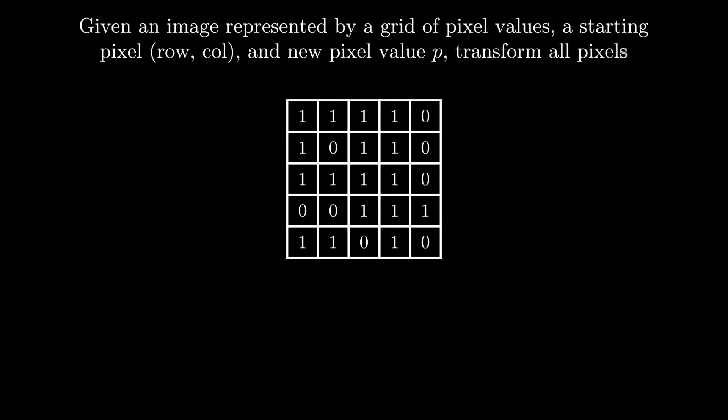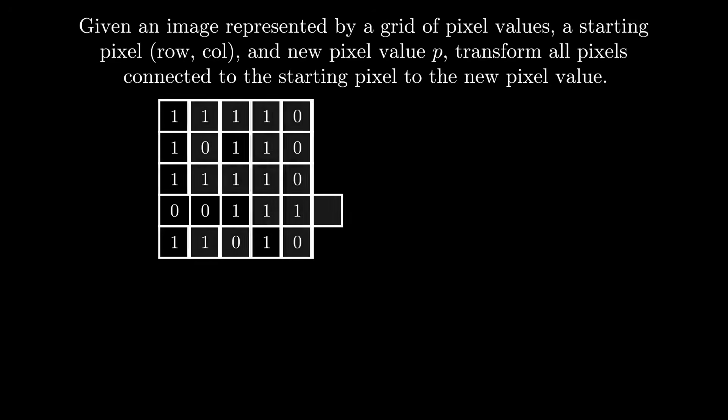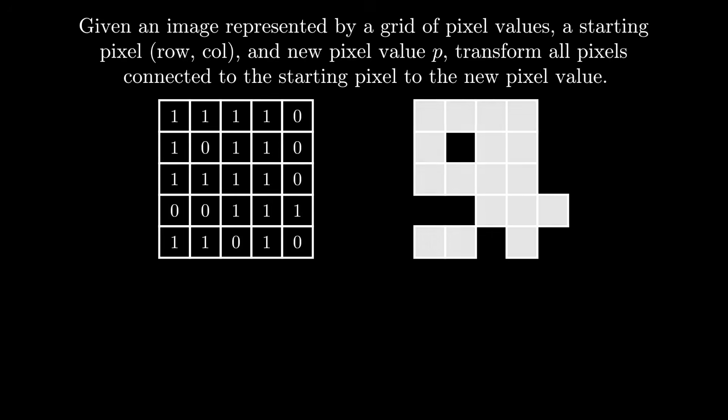Our goal is to transform all pixels connected to the starting pixel to a new pixel value. Let's deconstruct what's going on here. Given this set of pixel values, you can imagine a corresponding image where the value 1 represents the color white and 0 represents black. This is quite an oversimplification, but it's one we'll make for now so that we can focus on the important parts of the problem.